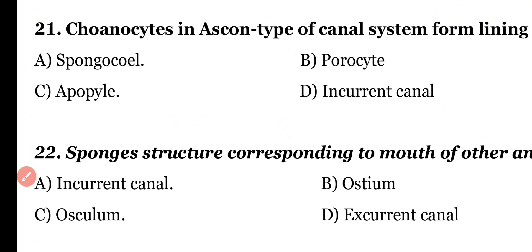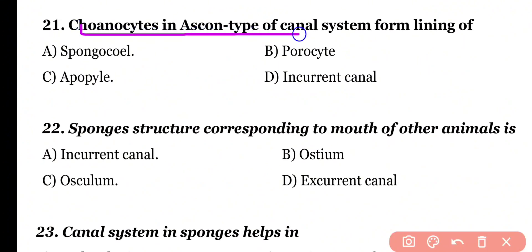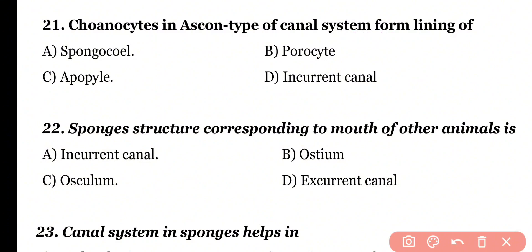Question number 21. Choanocytes in ascon type of canal system form the lining of: spongocoel, porocyte, apopyle, or in-current canal. Correct answer is option A. Choanocytes in asconoid type of canal system form the lining of spongocoel or paragastric cavity.